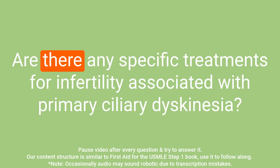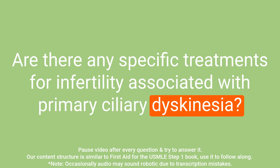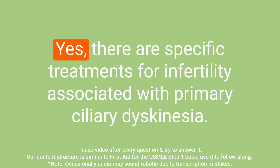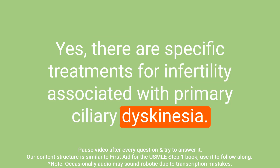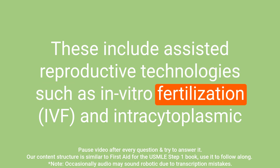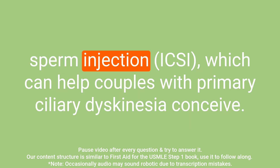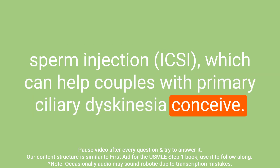Question: Are there any specific treatments for infertility associated with primary ciliary dyskinesia? Answer: Yes, there are specific treatments available, including assisted reproductive technologies such as in vitro fertilization and intracytoplasmic sperm injection, which can help couples with primary ciliary dyskinesia conceive.